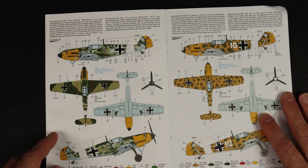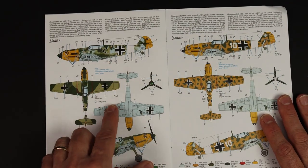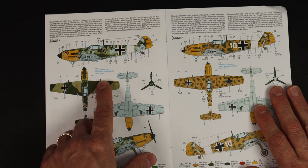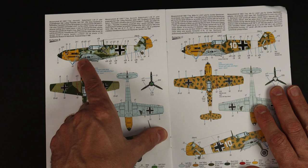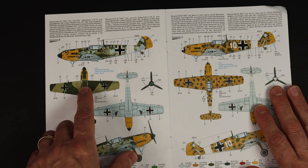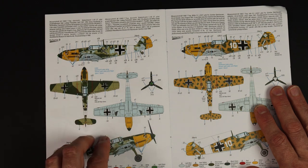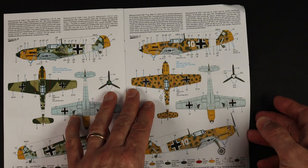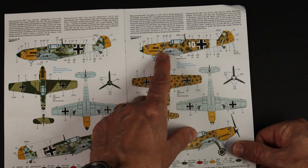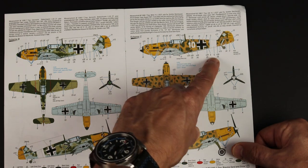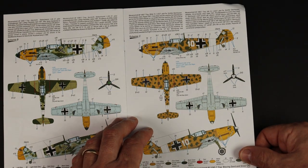I really like this one which is your standard RLM 02 and 71 over 65 but really heavily mottled fuselage and then mottled over the top of the yellow to tone that down. So I really like that one as well.